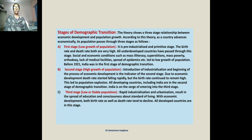Third stage: low population growth. Due to rapid industrialization, urbanization, spread of education, and consciousness about the standard of living, along with economic development, both birth rate and death rate tend to decline. You can see the chart on textbook page number 38, which shows from 1901 to 2011 how birth rate and death rate have changed — go and study that chart.